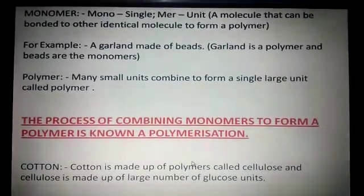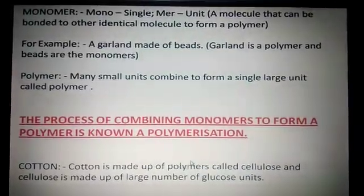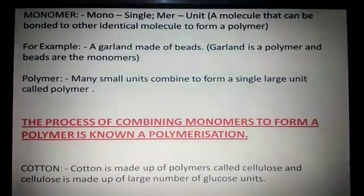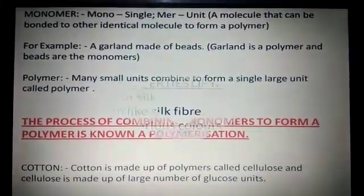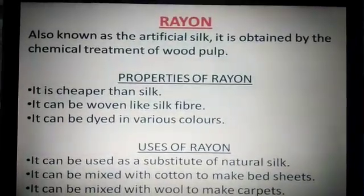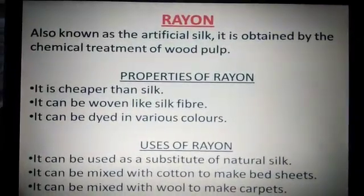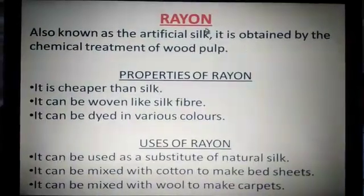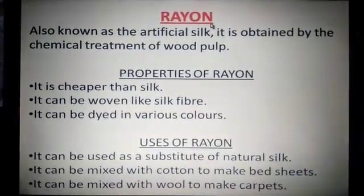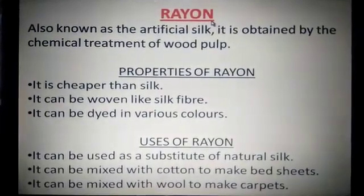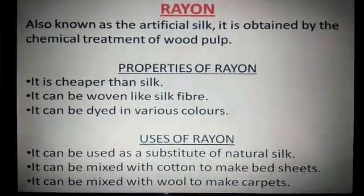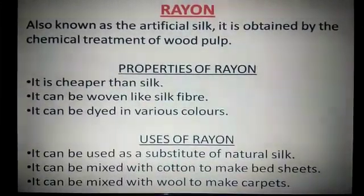This is a general introduction of polymer, monomer, and polymerization. Now, one by one, we will see all the artificial or synthetic fibers. The first synthetic fiber I will talk about is rayon. Rayon's appearance is just like silk. People prefer rayon because they get all the properties and uses from this fiber, just like silk.